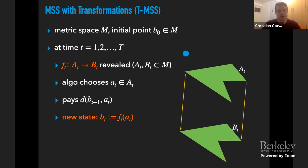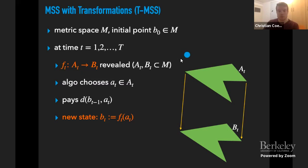To address these limitations, we introduced this new problem which we call Metrical Service Systems with Transformations. The definition is very similar: we have a metric space and some initial point. But now instead of just being given a set AT, we receive some function that maps a set AT to some other set BT. The algorithm has to go to a point in the set AT and pays the distance from the previous point to AT. Then we apply this transformation — the new state of the algorithm becomes the image of AT under this transformation — and for this transformation we don't charge any additional cost.